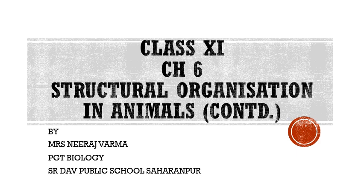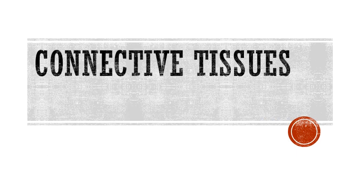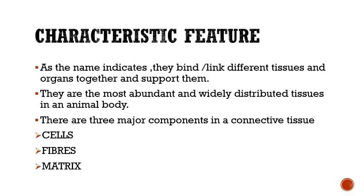Good morning students, welcome to the biology class. We are continuing with the same chapter: Structural Organization in Animals, that is animal tissue. Today we are going to start with the second very important animal tissue, that is connective tissue. As the name indicates, they bind or link different tissues and organs together and support them. They are the most abundant and widely distributed tissues in an animal body. There are three major components: cells, fibers, and matrix.